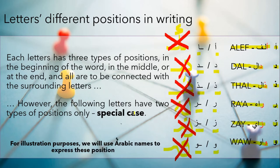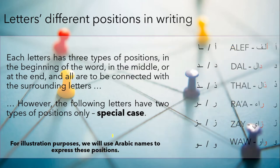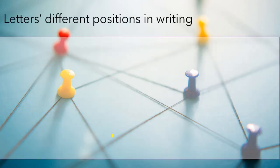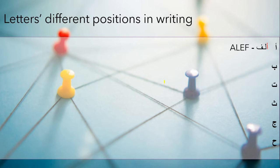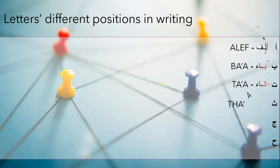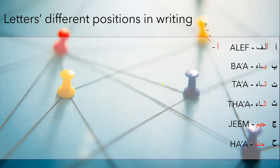Now let's go to the general rule — how we connect Arabic letters to each other. Just for illustration, we will use only names, because if we used other examples we would need to know their meanings. We're using names just to show how we connect or link these letters to each other, forming the names. Now for the first set — from Alif till the letter Ha: Alif, Ba, Ta, Tha, Jim, Ha — this is what we are going to start with, writing our different positions.